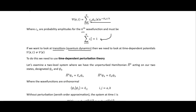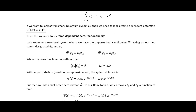If we want to look at transitions between states, which is quantum dynamics, we need to look at time-dependent potentials — where the potential as a function of time is not just equal to the potential as a function of space. To do this we need time-dependent perturbation theory. For a simple two-level system, we have the unperturbed Hamiltonian H⁰ acting on our two states psi sub a and psi sub b, giving us the zeroth-order time-independent Schrödinger equations.